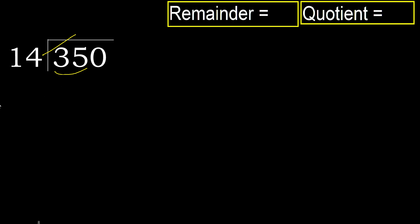But not greater. 14 multiplied by 3 is 42 — 42 is greater. 14 multiplied by 2 is 28 — 28 is not greater.